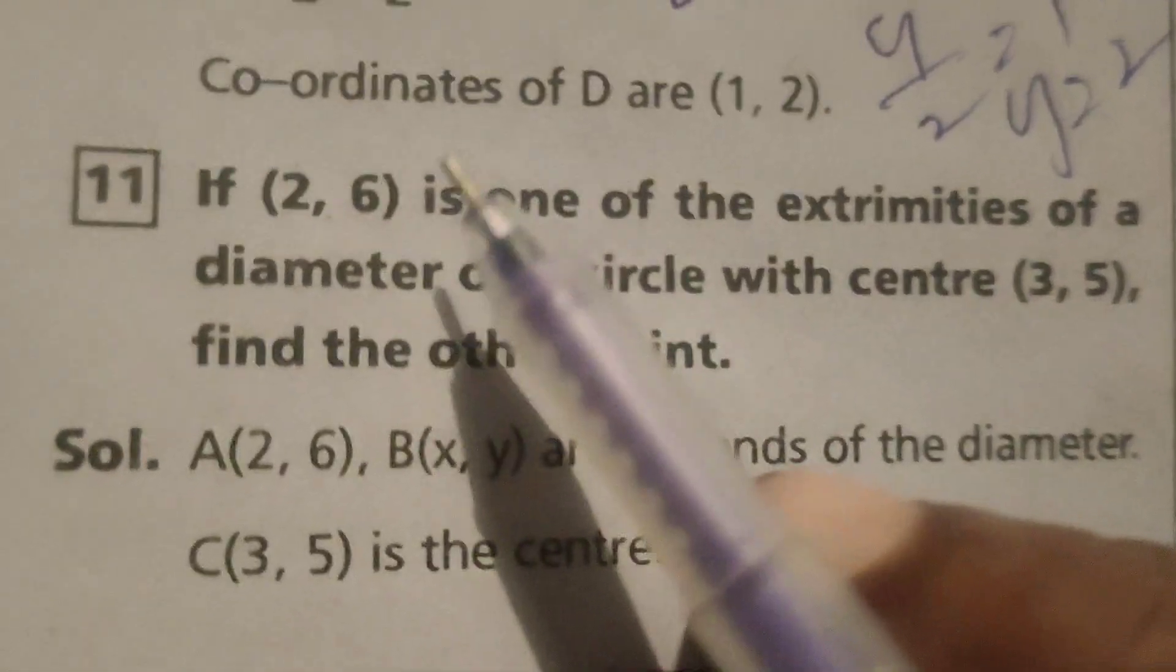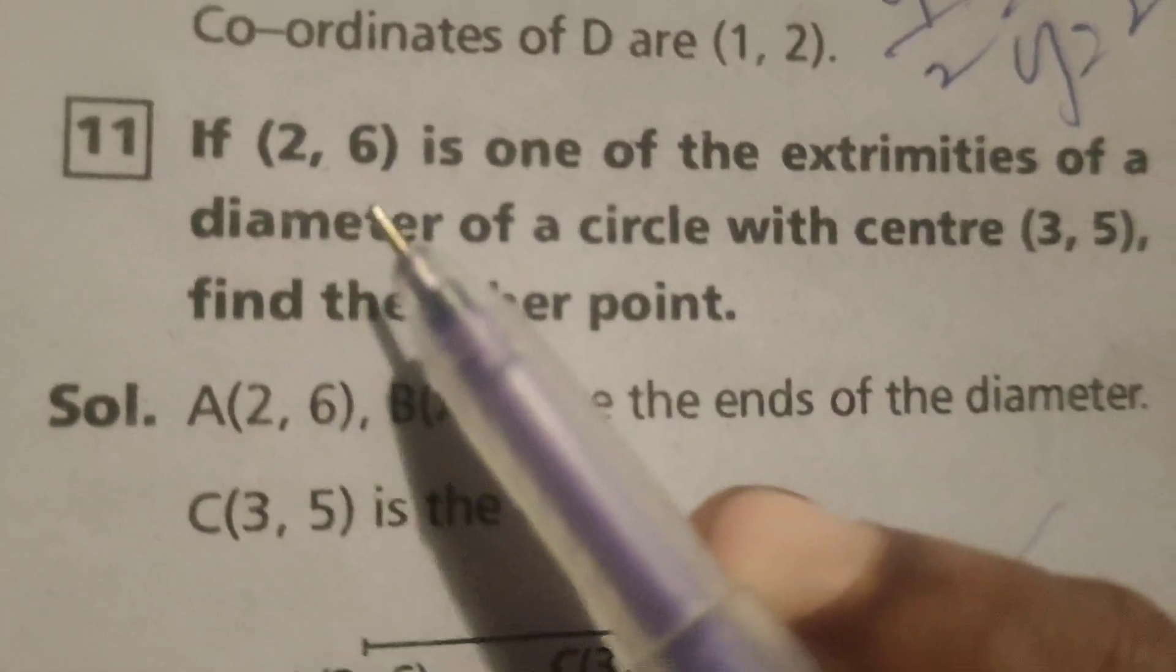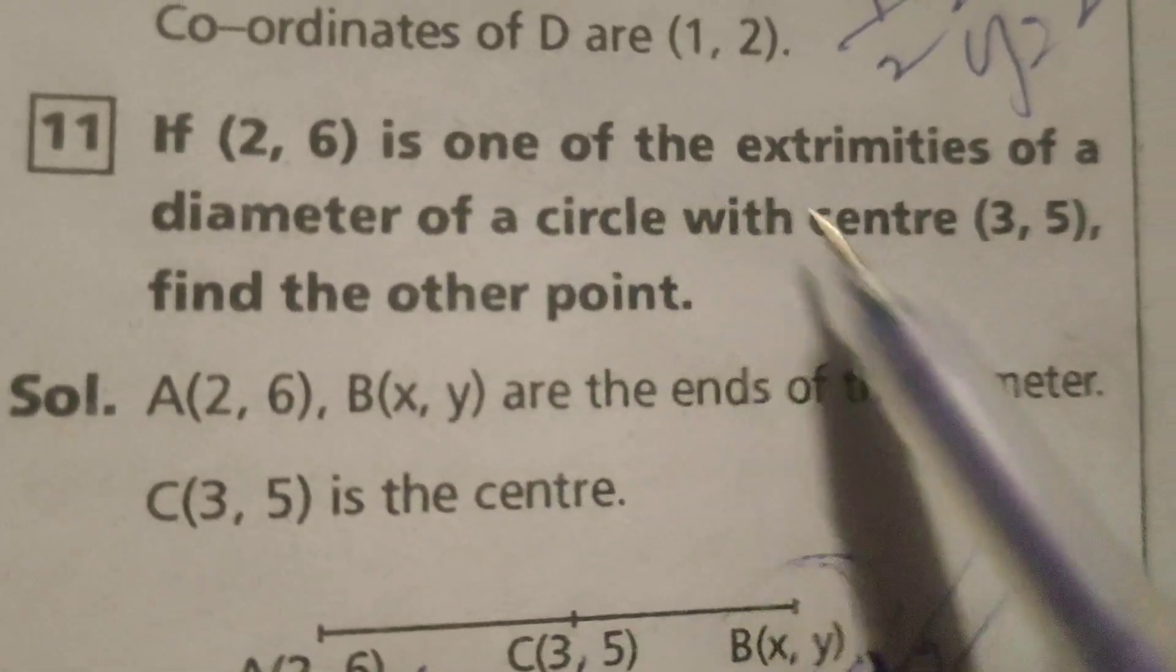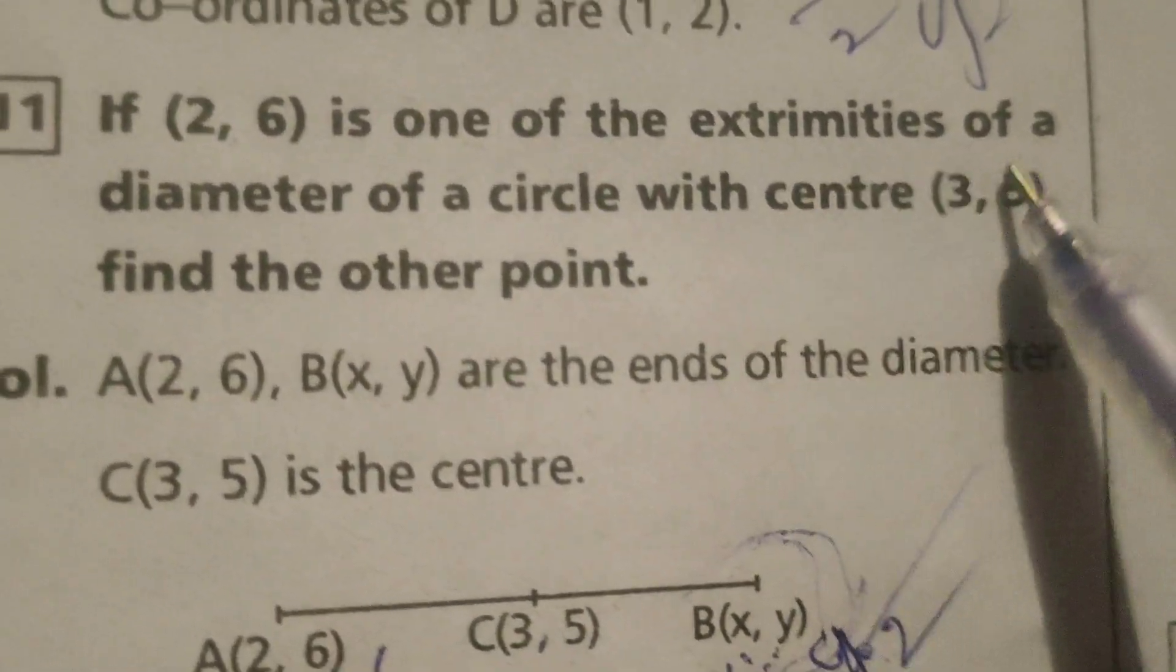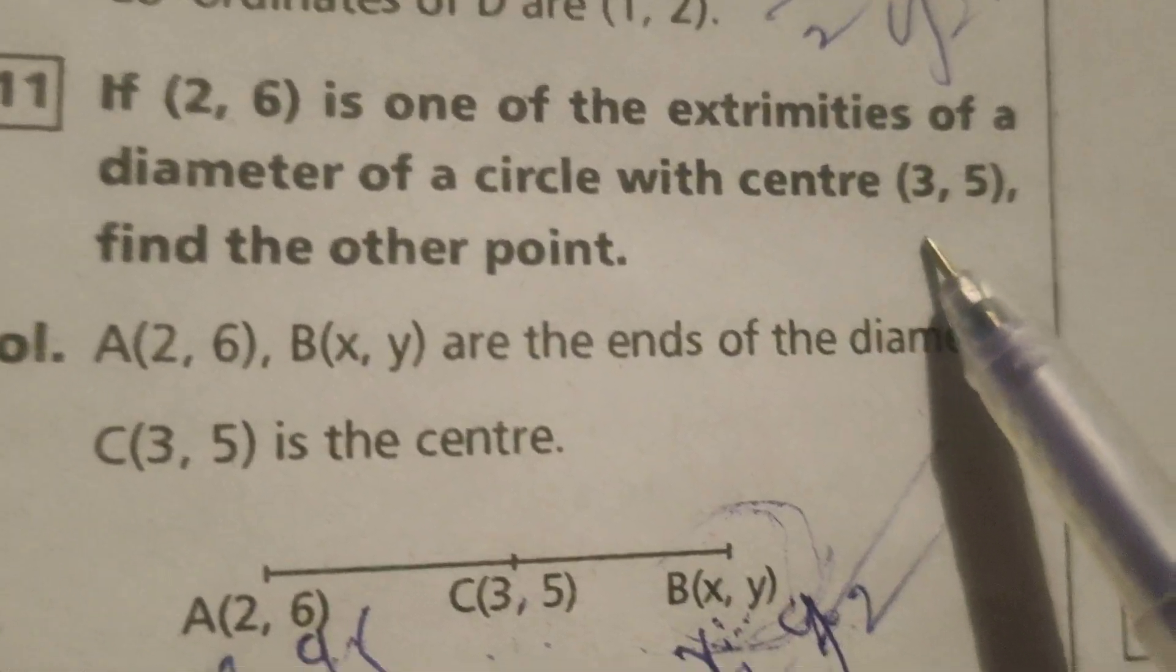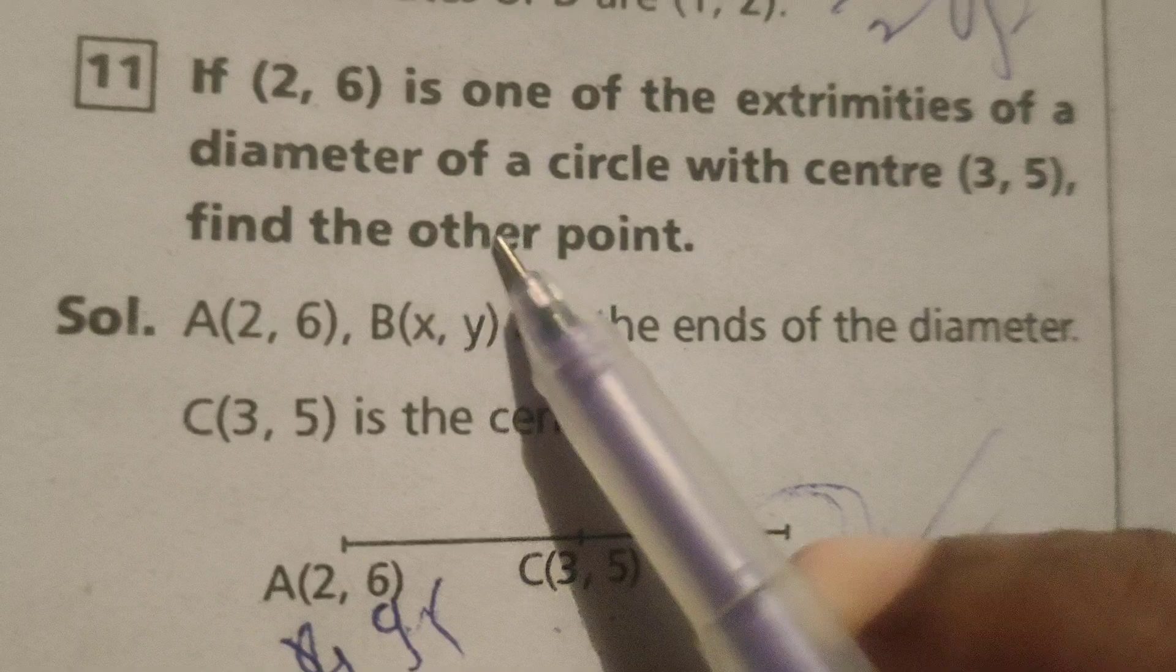This is Dr. Eity. Now today we are going to explain this problem. If (2,6) is one of the extremities of a diameter of a circle with center (3,5), find the other point.